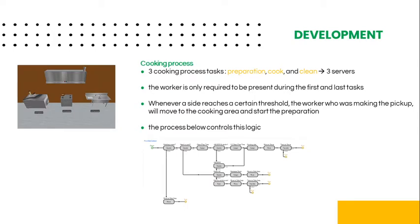To model the three tasks performed during the cooking process — preparation, cook, and clean — we use three different stations. The worker is only required to be present during the first and last tasks. Whenever a site reaches a specific threshold, the worker making the pickup will move to the cooking area and start the preparation. Even though one or more sites may be cooking, there might be stock left in the cabinets, so other meals can continue to flow through the system until the stock runs out completely. After finishing the cleaning task, the worker will restock both the cabinet and the assembly station.